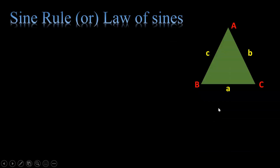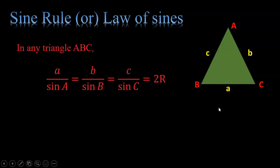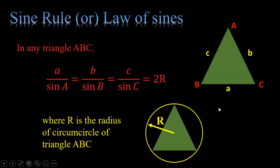Now let us look at the sine rule, or law of sines. We are going to first see the statement followed by its proof. The statement is: a/sin A = b/sin B = c/sin C = 2R, where R is the circumradius, that is, the radius of the circumcircle of triangle ABC. So 2R is going to be the circumdiameter.